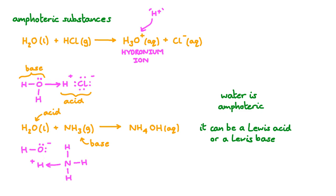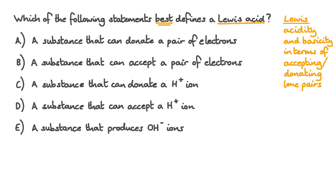Now let's take a look at a question: which of the following statements best defines a Lewis acid? A: a substance that can donate a pair of electrons. B: a substance that can accept a pair of electrons. C: a substance that can donate an H+ ion. D: a substance that can accept an H+ ion. Or E: a substance that produces OH- ions. The first thing that's important to identify is that we're not looking for a simply correct answer — we're looking for the best statement out of the five.